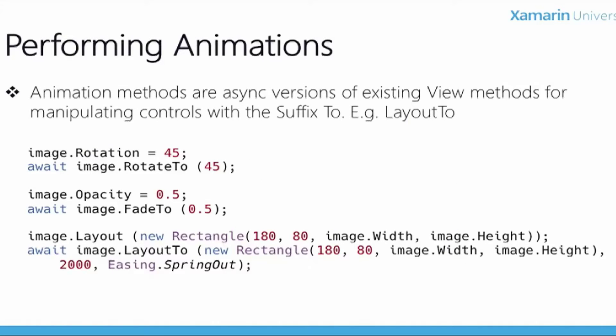Now let's look at the code for using animations. You'll find a correlation between a property and its corresponding animation method. Changing the visual aspects of an item uses properties like rotation or opacity, and the corresponding animation methods are RotateTo and FadeTo — which are asynchronous and reflect the destination value. For example, RotateTo will animate the rotation property to the new destination position, and FadeTo changes the opacity from the current value to the specified amount. Similarly, LayoutTo changes the bounds of the view to a new position over the specified time period, where you can specify the duration and the easing effect to use.